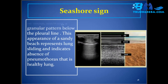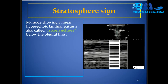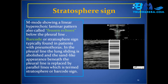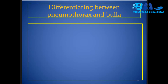The seashore sign on M-mode shows a granular pattern below the pleural line; this sandy beach appearance represents lung sliding and indicates absence of pneumothorax in a healthy lung. The stratosphere sign, also called the barcode sign or frozen echoes, shows a linear hyperechoic laminar pattern on M-mode typically found in patients with pneumothorax. In pneumothorax, lung sliding is abolished and the sand-like appearance beneath the pleural line is replaced by parallel lines, termed the stratosphere or barcode sign.